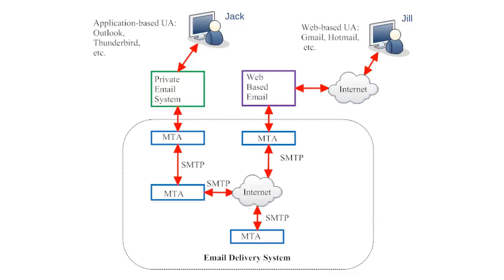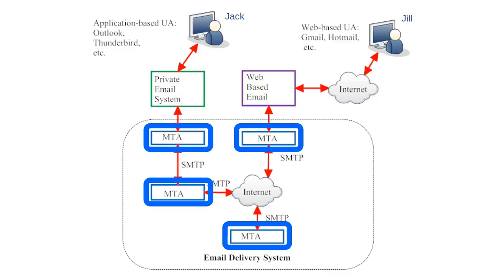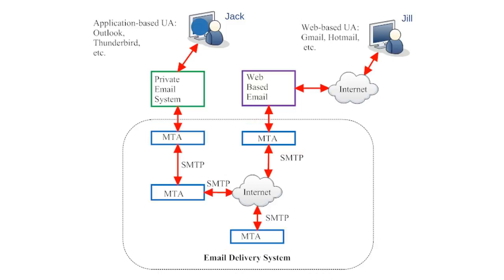Jack writes an email and sends it off through the internet. Jack's email must travel from his private email system through a series of servers called message transfer agents, or MTAs, before it can reach its destination over on Jill's side. Jack composes his message in his user agent, and when he hits send, the user agent sends the email to the first message transfer agent. That MTA sends it to another MTA, which sends it through the internet to a third MTA. The final MTA stores the message until Jill's web-based user agent requests access to new incoming emails.